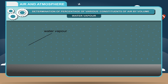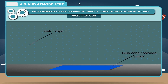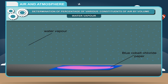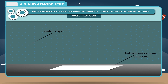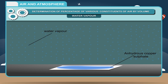The presence of water vapor can also be tested with blue cobalt chloride paper, which turns pink on coming in contact with moisture in air. Similarly, anhydrous copper sulfate, which is white in color, turns blue on coming in contact with water vapor in air.